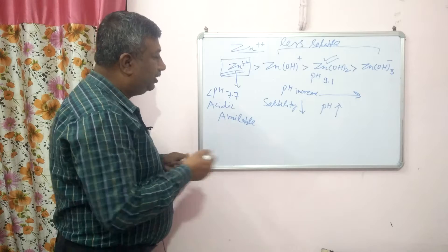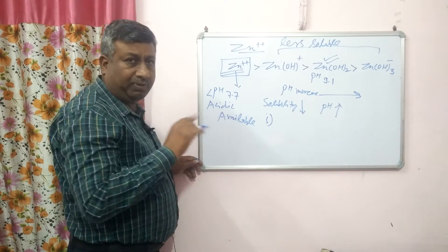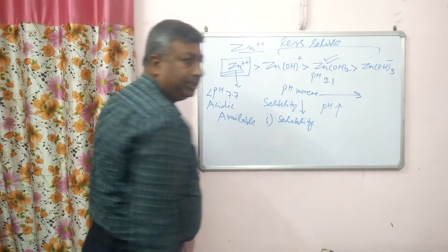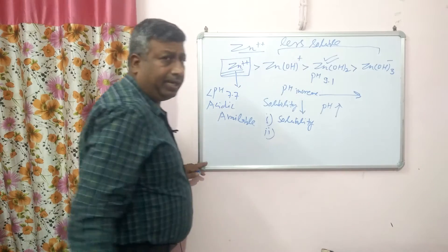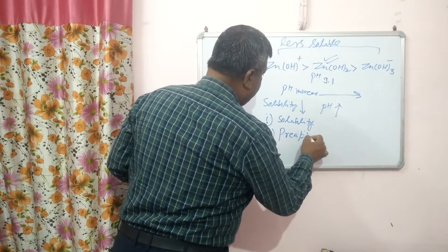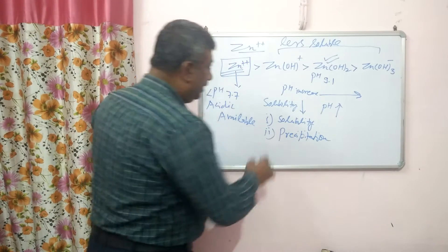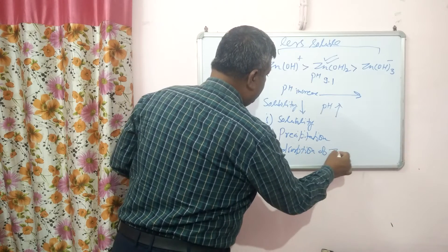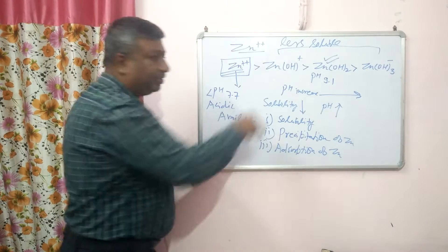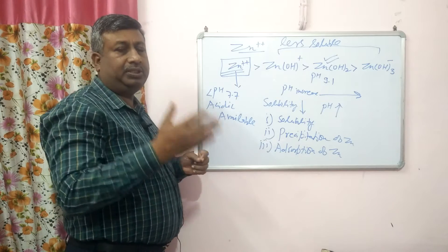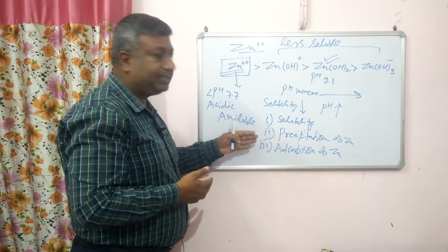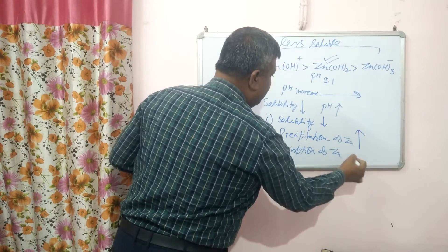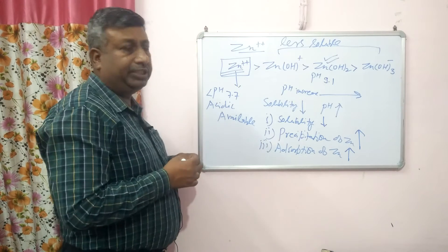Generally, there are three reasons for low zinc availability at high pH. First is solubility — solubility is reduced. Second, at high pH, precipitation of zinc takes place. Third, adsorption of zinc increases. So: solubility decreases, precipitation increases, and adsorption of zinc increases — that's why availability of zinc is reduced.